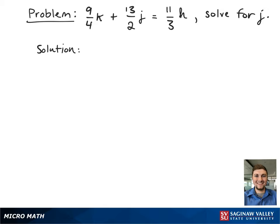Here we have the formula 9/4 k + 13/2 j = 11/3 h and we're asked to solve for j.